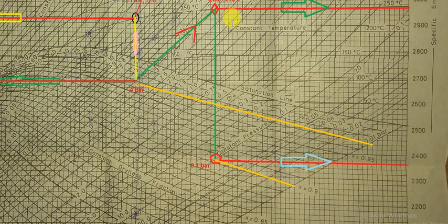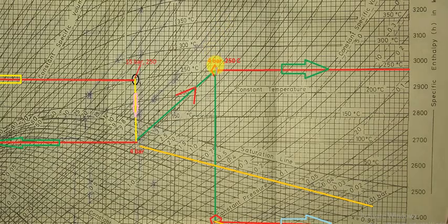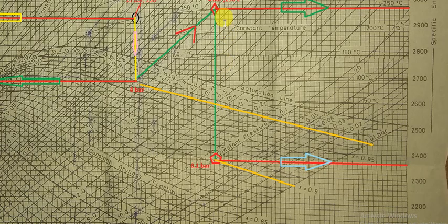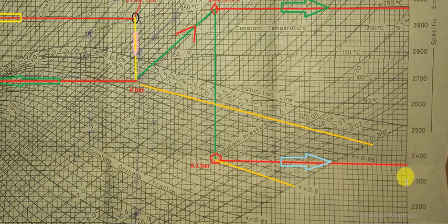From point 3 at 4 bar and 250 degree Celsius, the steam expands isentropically in the low pressure turbine. We draw a straight vertical line from point 3 down to the 0.1 bar constant pressure line. Moving horizontally, we note down the enthalpy value H4. Reading the chart, H4 is approximately 2360 kJ/kg. So we now have all four enthalpy values: H1, H2, H3, and H4.